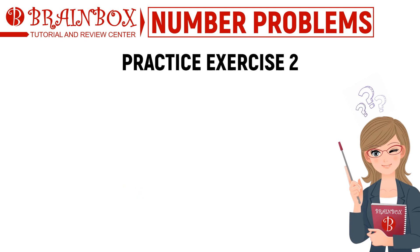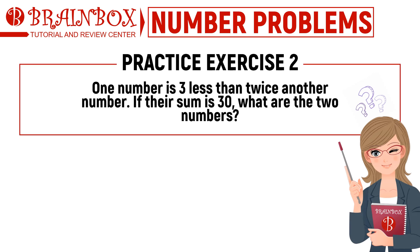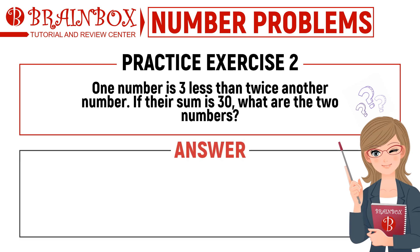Number two: one number is three less than twice another number. If their sum is 30, what are the two numbers? Timer starts now.